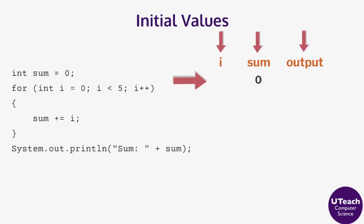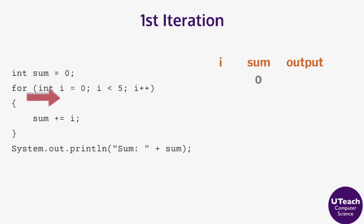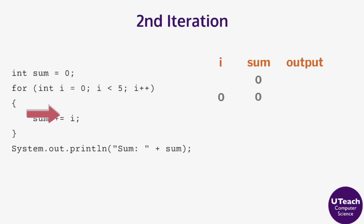The initial value of sum is 0. For the first iteration, the value of i is added to sum and then sum is updated to 0. For the second iteration, the value of i is added to sum and then sum is updated to 1.